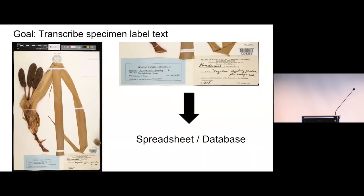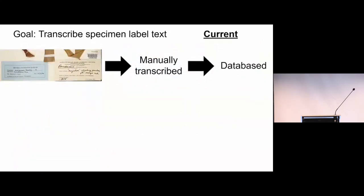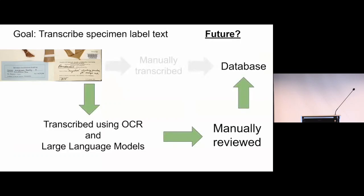We have a herbarium specimen voucher, and we need to transcribe the contents of its labels into a database. Typically, that would be a pretty manual procedure where a person would sit down at a computer, look at the label, type out the contents, and then that would be added to a database. However, by introducing large language models and optical character recognition, we sidestep most of this manual process and create a little detour.